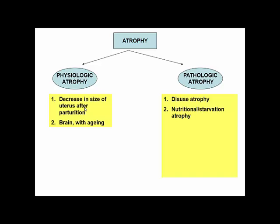The second is nutritional atrophy, referring to protein energy malnutrition — marasmus or starvation atrophy. It is associated with various skeletal muscle wasting, also called cachexia. That is another form of pathologic atrophy.